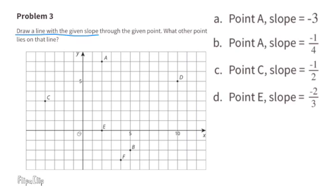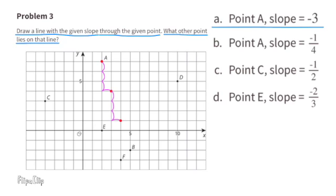Problem number 3. Draw a line with the given slope through the given point. What other point lies on that line? A: Point A, slope equals negative 3. First, I need to locate point A, and since it has a slope of negative 3, that means the rise is negative 3 and the run is one unit to the right. I can plot more points by going down 3 and to the right 1. Here I can see that point B is also on this line. Here's a look at the line with the negative 3 slope.